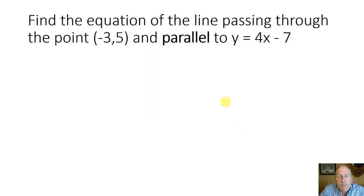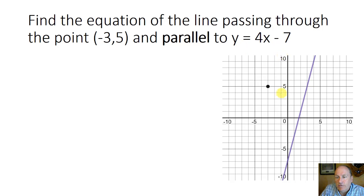So let's look at an example. Find the equation of a line passing through the point negative 3 comma 5 and parallel to y equals 4x minus 7. So graphically, here's what that looks like. Over here is the point negative 3, 5. And here, this purple line is the line given by the equation y equals 4x minus 7. So we want to find something like this, a line that's parallel to that purple line, yet passes through that point. How do we do that?